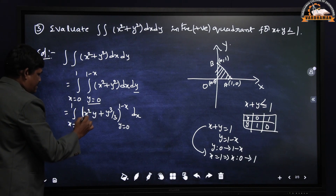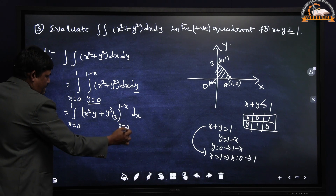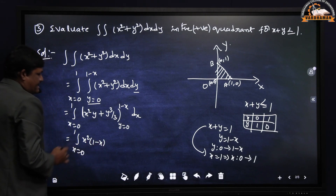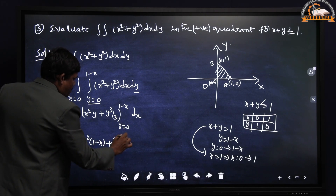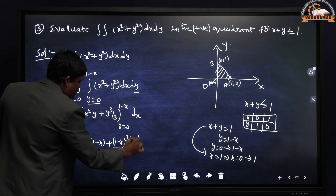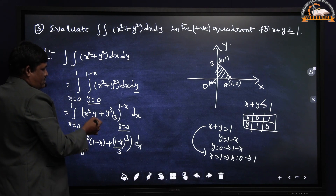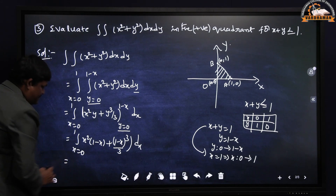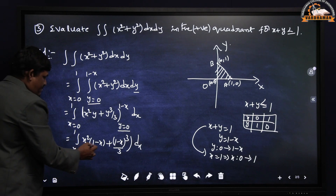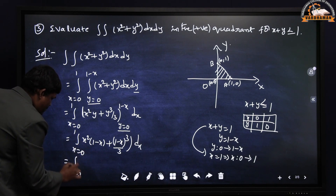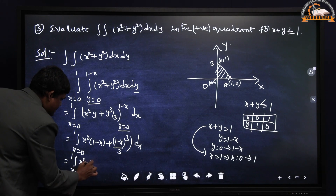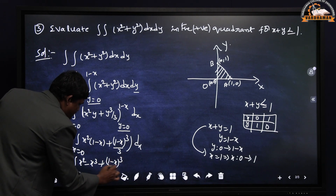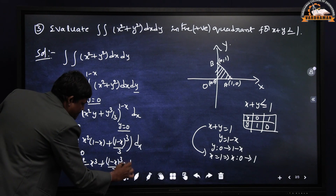I integrated with respect to y first because y contains the x limits. Now substitute upper limit (1−x) and lower limit 0. The lower limit gives 0. The expression becomes: integral from x=0 to 1 of [x²(1−x) + (1−x)³/3] dx, which expands to integral of [x² − x³ + (1−x)³/3] dx.